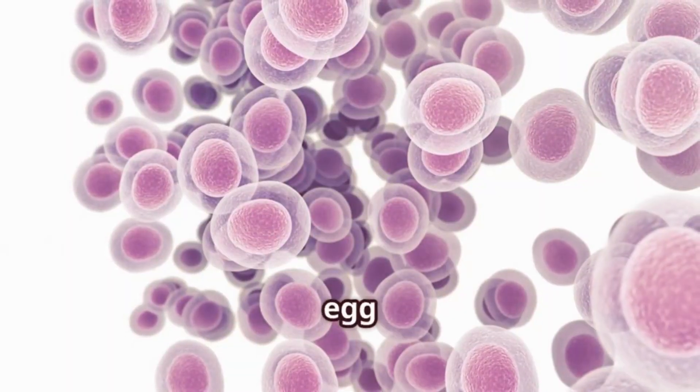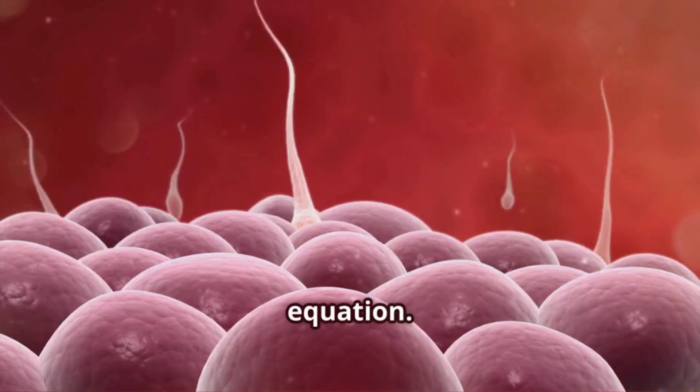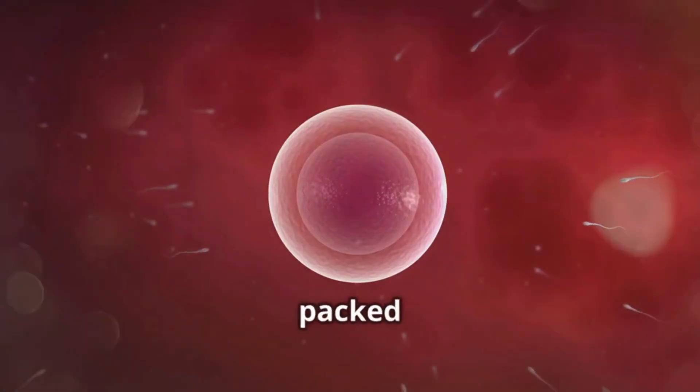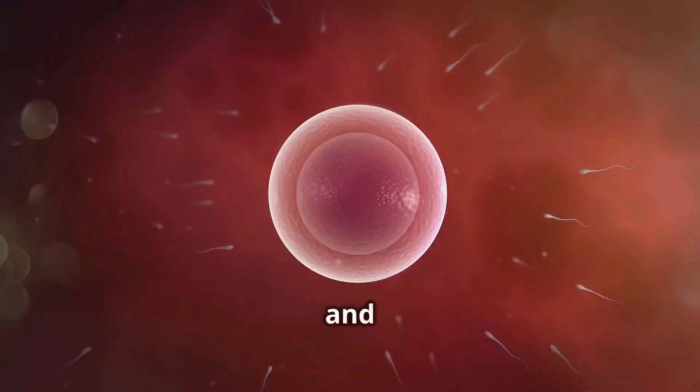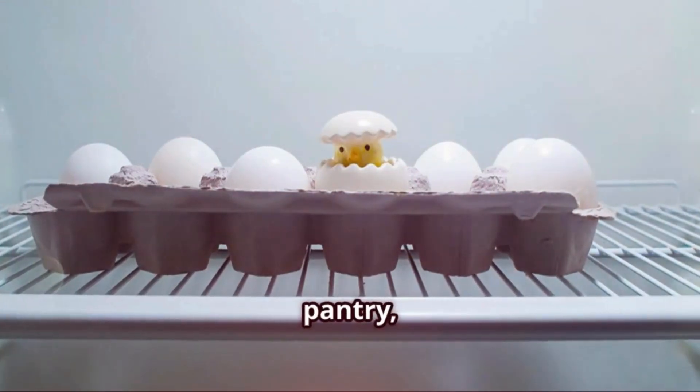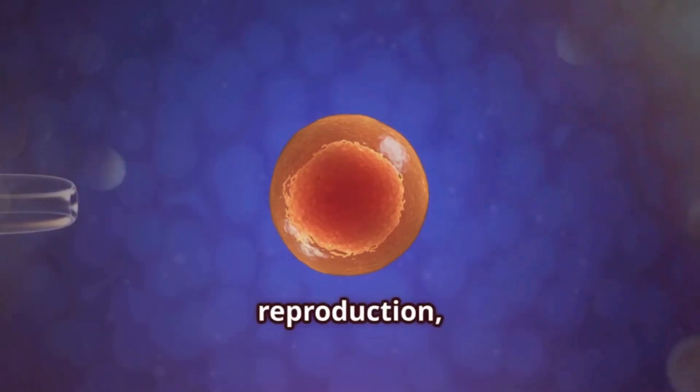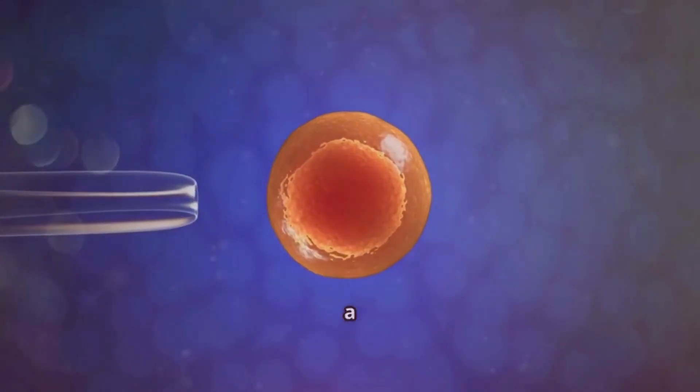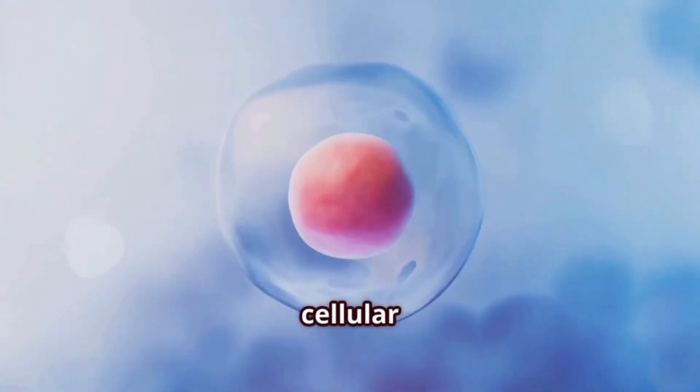Next we meet the egg cell—the largest cell in the human body and the other half of the reproductive equation. This round powerhouse is packed with nutrients, providing everything a fertilized egg needs to start dividing and growing. Think of it as a cozy, well-stocked pantry ready to nourish a new life. The egg cell plays a vital role in reproduction, patiently waiting to fuse with a sperm cell and create a whole new human being.